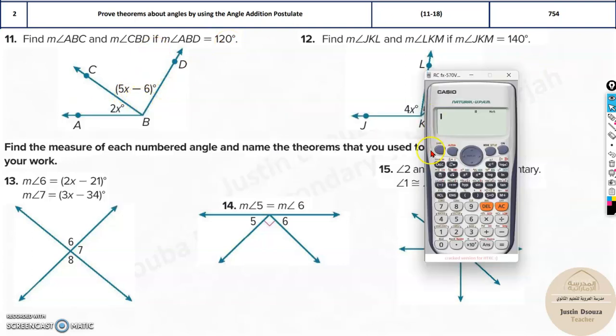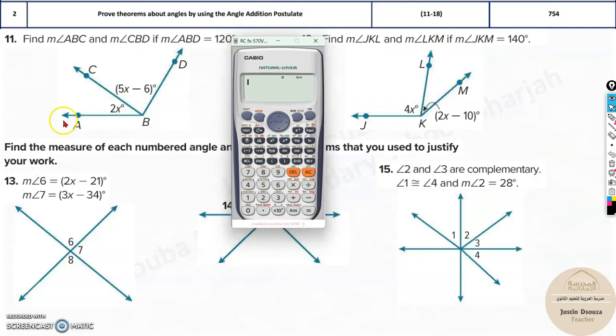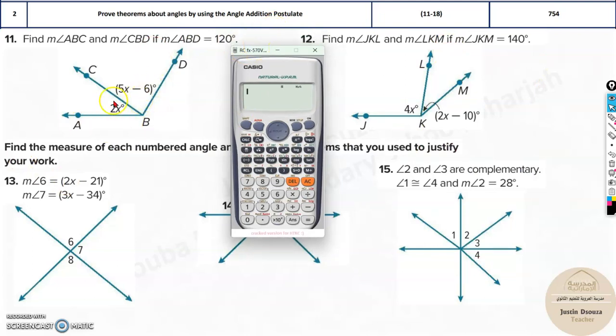Now, say for example, you can use your calculator for this. Okay, I'm just doing it directly. Now, we know 2x plus 5x minus 6. That is equal to 120. That is the angle addition postulate. If you press equal to, you will not get the answer because x is variable. You need to press shift and then solve it up. What is the answer? You will get 18 over here. The x value is 18.